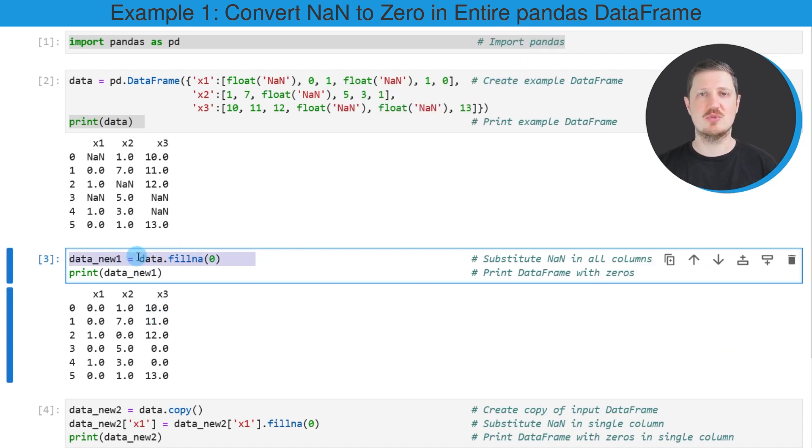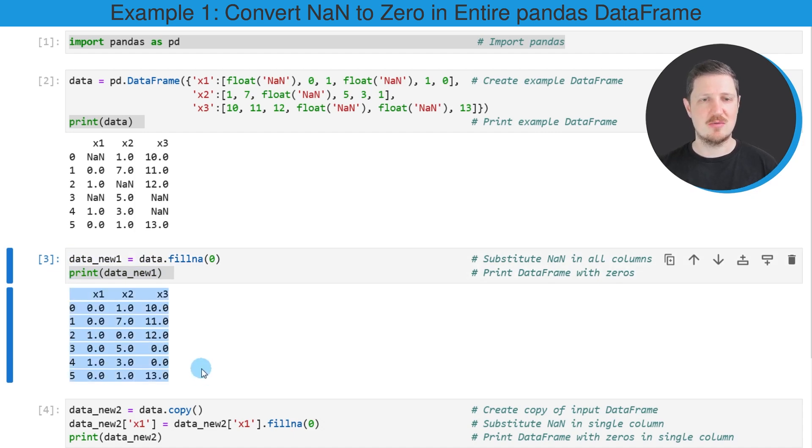After running this line of code, a new data frame object called data new1 is created. We can print this data frame below the code box using the print function. You can see that we have updated our input data frame, because this time all the NAN values have been replaced by the value 0.